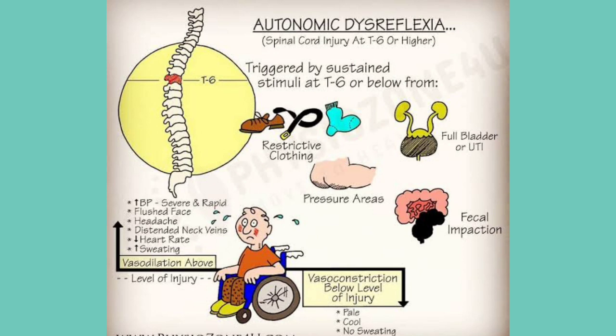Due to fullness of the bladder, urinary tract infection, fecal impaction, pressure ulcer, or restrictive clots, there is stimulation of the sympathetic nervous system below T6. The impulses are carried by afferent neurons toward the brain, but because of the block at T6, information cannot reach the brain. Severe vasoconstriction occurs below T6, which is sensed by baroreceptors in the arch of the aorta.